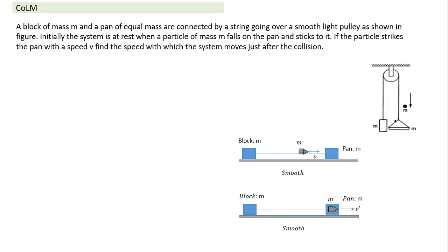There is a pan of mass m and another mass suspended over a pulley. A mass comes and strikes the pan with velocity v and sticks to it. There is some similarity and some dissimilarity with the previous question. Here also, because the string length cannot change, if this point in the string has a downward velocity v', this point must also have velocity v'. So both have equal magnitude of velocity, but direction is opposite because of the pulley.